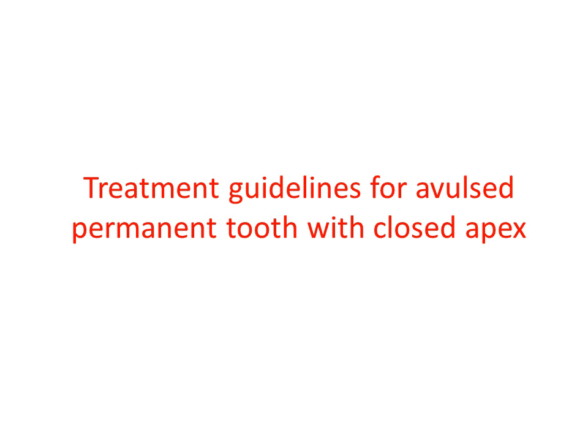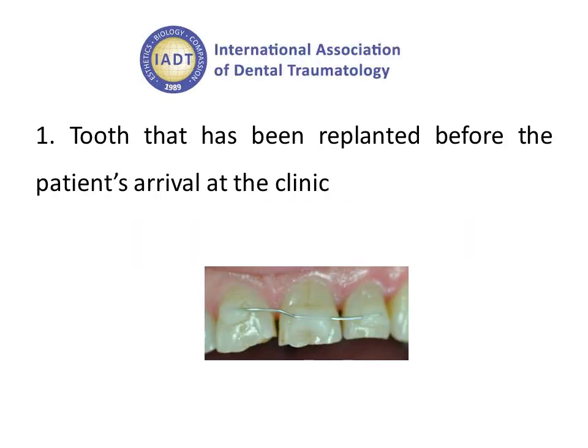Now I will discuss the treatment guidelines for avulsed permanent tooth with a closed apex. An important point: if a primary tooth has been avulsed, we do not replant it. If a primary tooth is replanted, it undergoes necrosis and sepsis can occur, which may inhibit the growth of the permanent successor. Therefore, primary teeth are never replanted — only permanent teeth can be replanted.